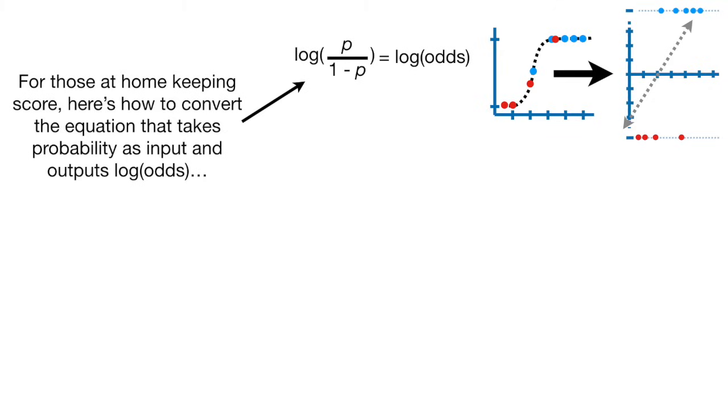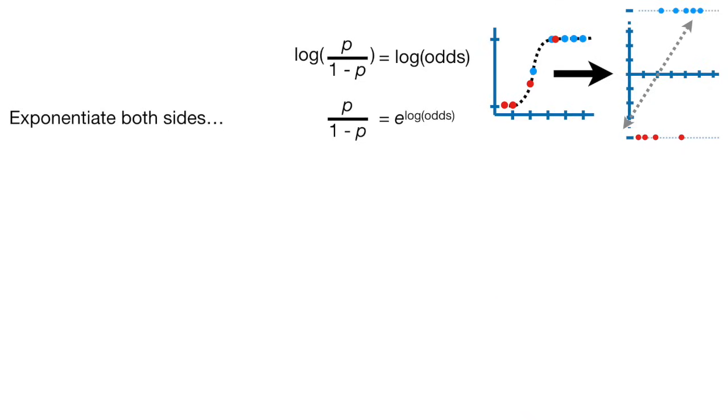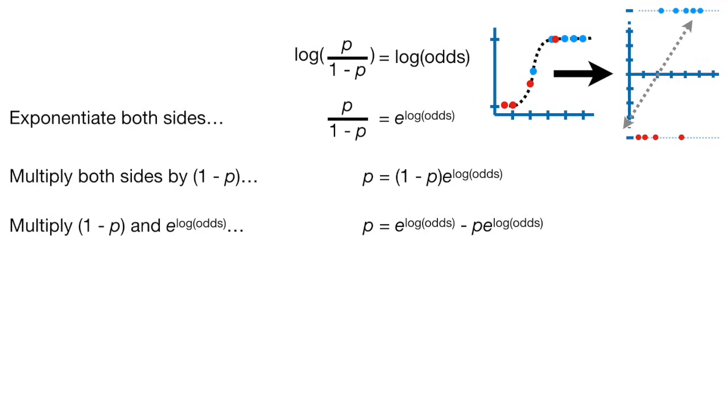For those at home keeping score, here's how to convert the equation that takes probability as input and outputs log odds into an equation that takes log odds as input and outputs probability. First, we exponentiate both sides. Then we multiply both sides by (1 - p), and then multiply (1 - p) and e to the log odds.